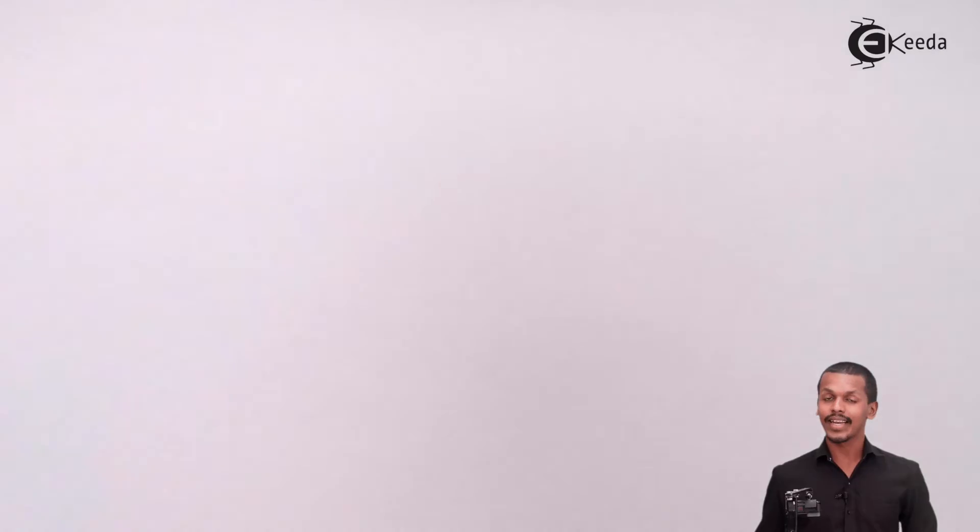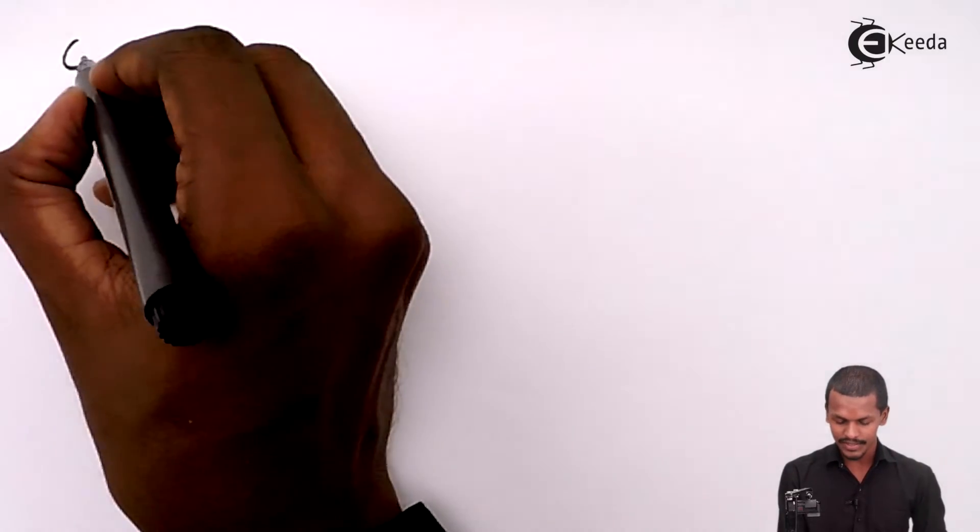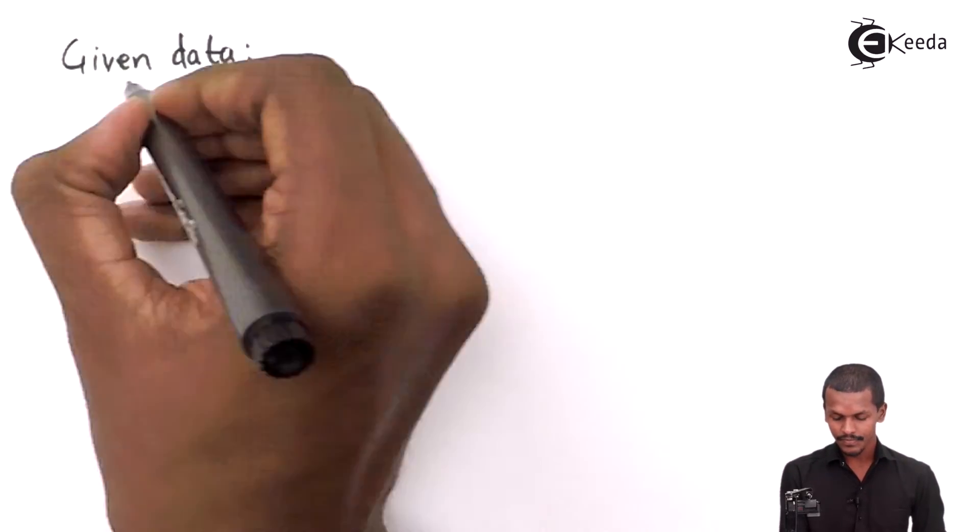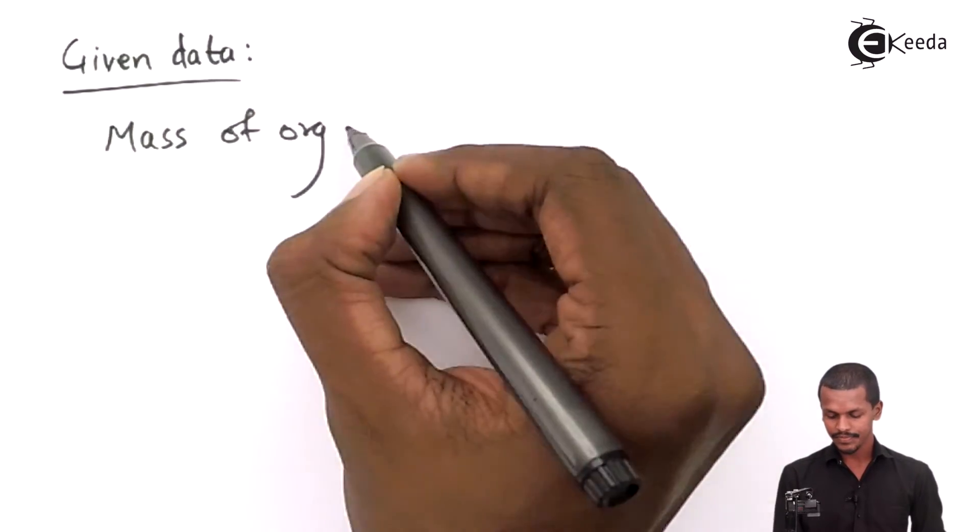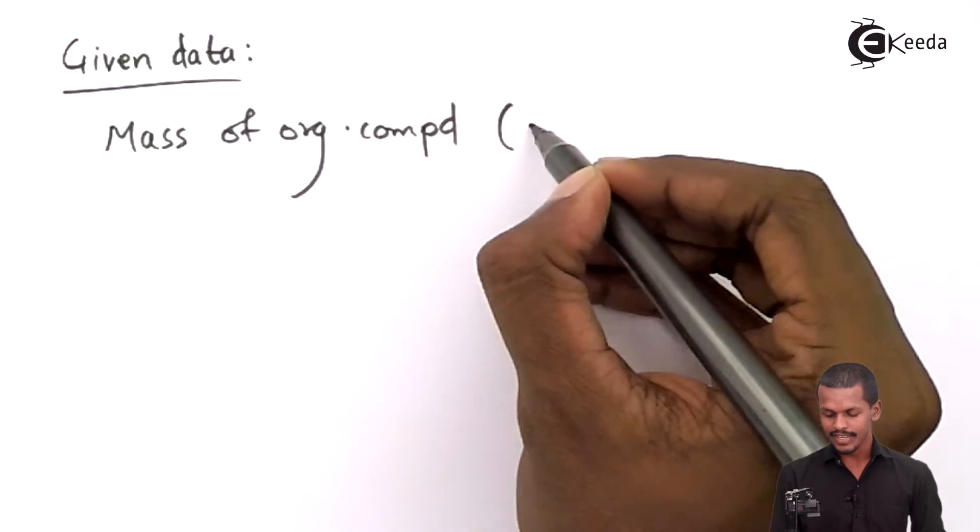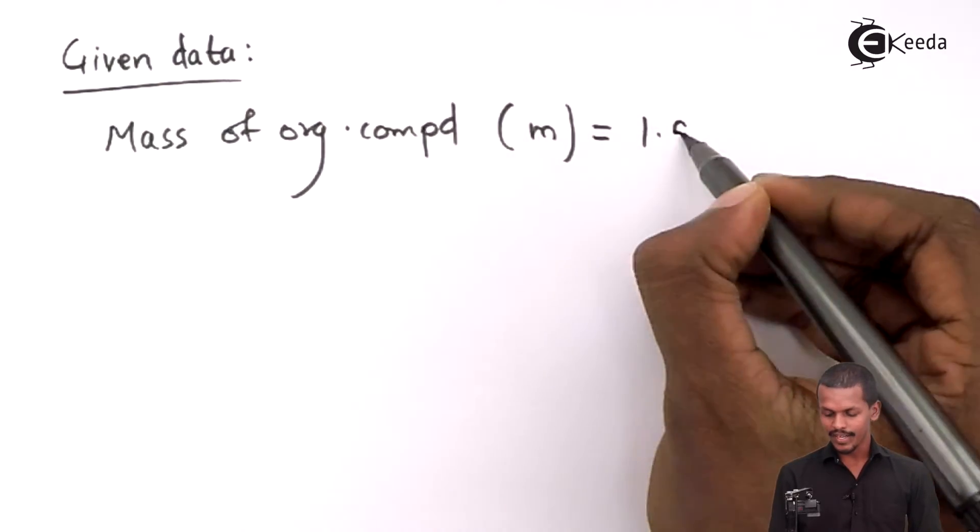First, we write the given data. The mass of the organic compound, small m, is given as 1.5 grams.